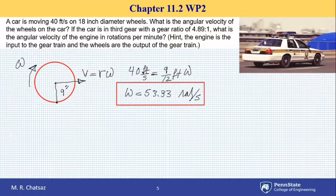And the hint says the engine is the input to the gear train and the wheels are the output of the gear train. Well, if the gear ratio is 4.89 to 1, this means that the engine is rotating that much faster, 4.89 times faster than omega of the wheels.